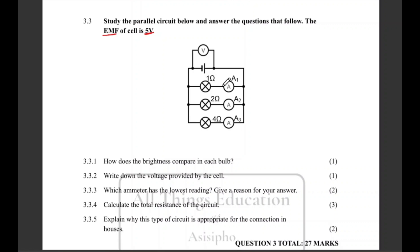How does the brightness compare in each bulb? Since this is a parallel circuit, that means that all the bulbs are going to have the same or equal brightness. So all the bulbs have the same or equal brightness. That is one mark.